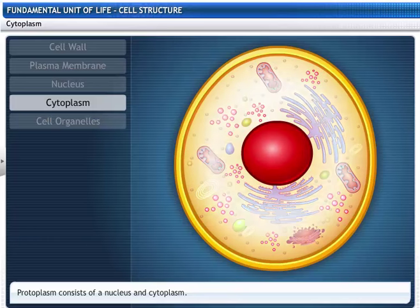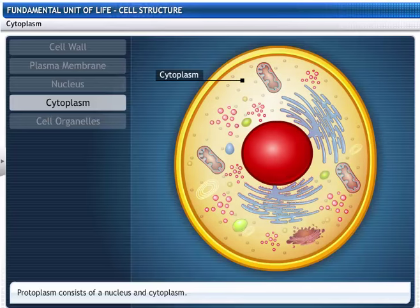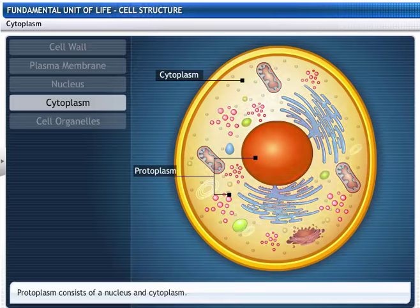The fluid living content between the plasma membrane and the nucleus is called cytoplasm. The nucleus along with the cytoplasm makes up the living content of the cell called protoplasm.